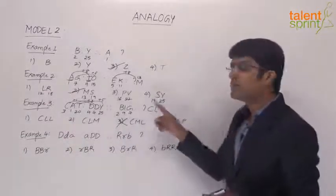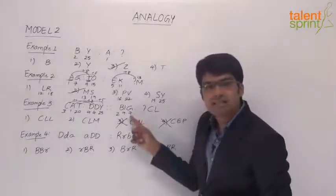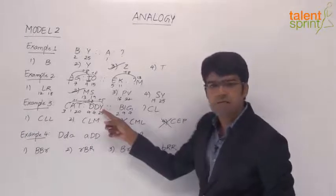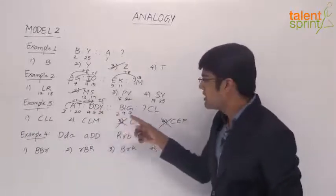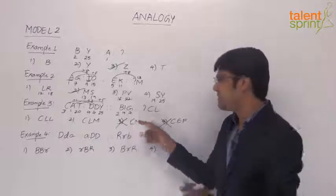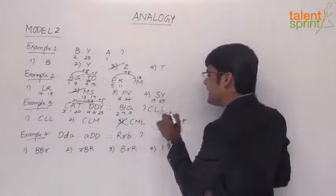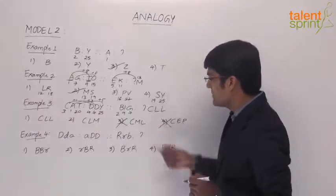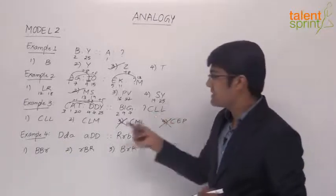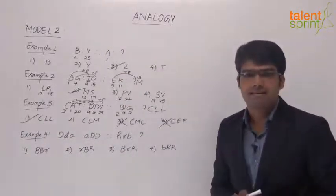By working on the last position we can mark the right answer. The last position is G, which is 7. Going by the logic, the last position is moved 5 places in the forward direction — 7 plus 5 is 12. So this should be the 12th letter, which is L again. That means the answer here has to be CLL, which is the first option. So the first option CLL is the right answer.